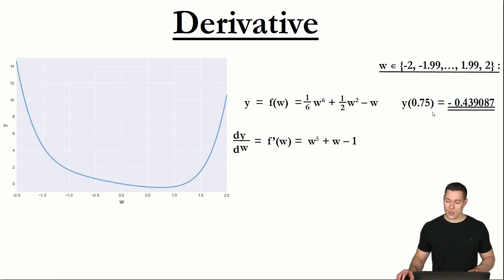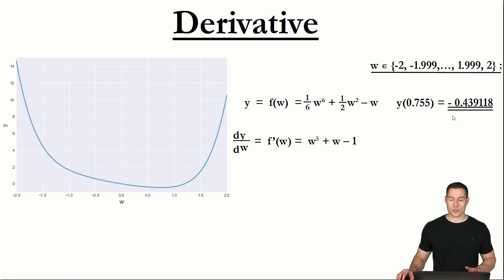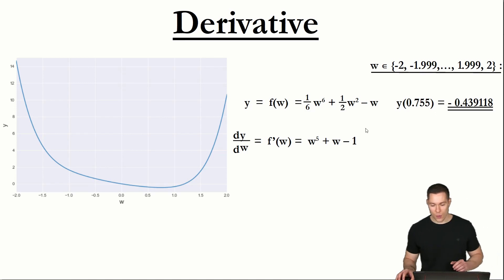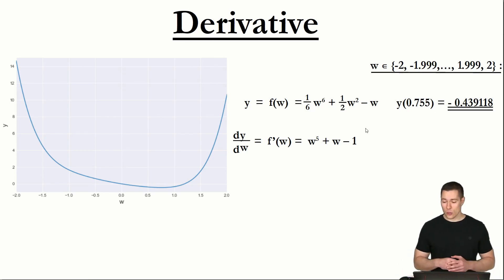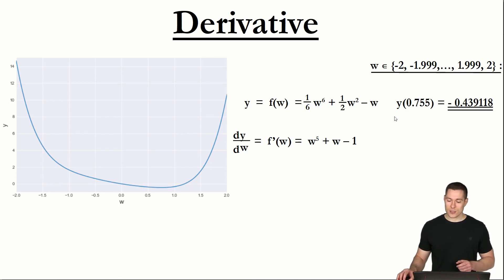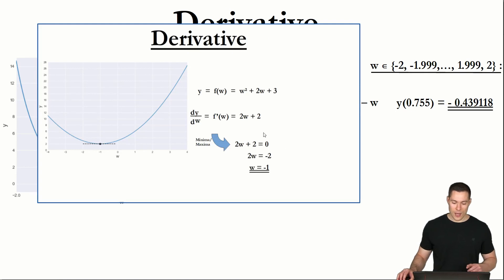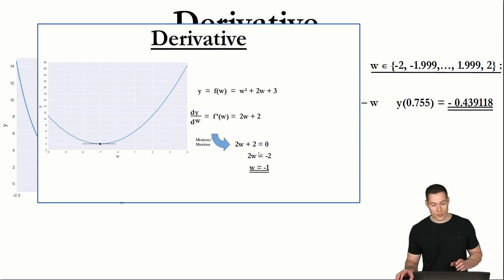This is only an approximation because if we used three digits instead of two, we could find a w that would result in an even lower y. And if we used four digits, we could get an even lower y and so on. So a general characteristic of numerical approaches is that the solution we get is only an approximation and not an exact value like with the analytical approach.